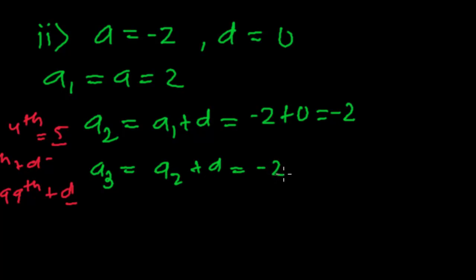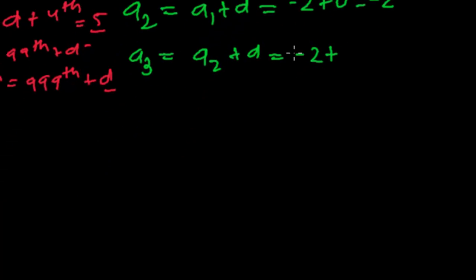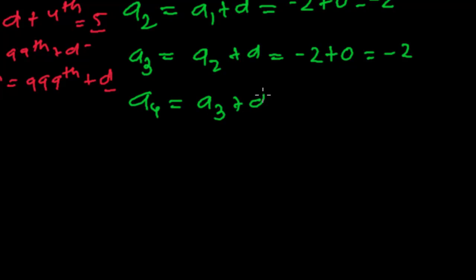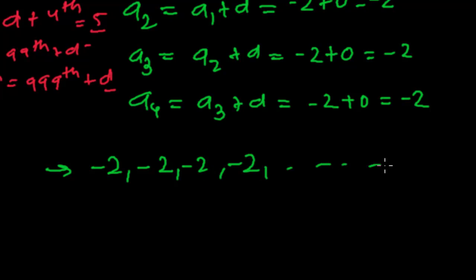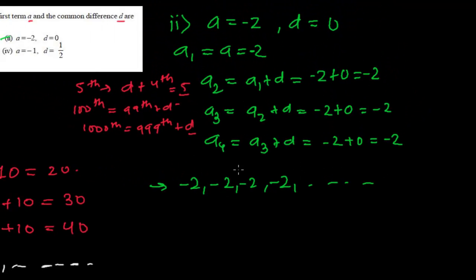Again, the third term is the addition of the common difference to the second term. The second term here is negative two, so negative two plus the common difference, that is zero — that is again negative two. And the fourth term is again the addition of the common difference to the third term. The third term is negative two and we add zero, so it is negative two again. So the first, second, third, and fourth terms are all the same.